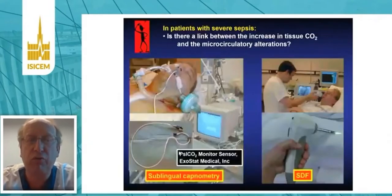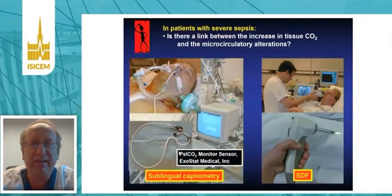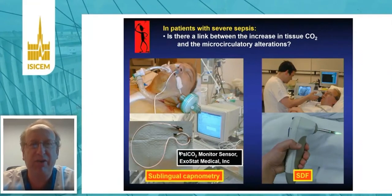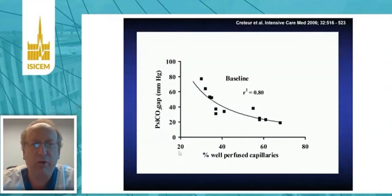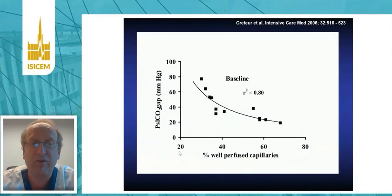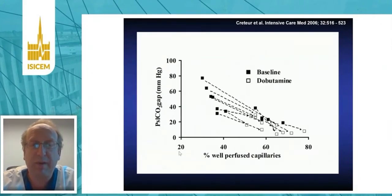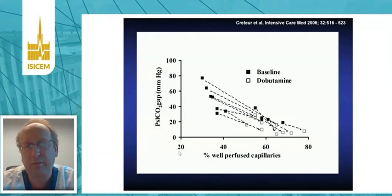Fifteen years ago, we were the first to study the link between increased tissue CO2 measured sublingually and microcirculatory alterations in septic patients, assessed using the SDF imaging device. We showed a nice correlation between the percentage of well-perfused capillaries and the CO2 gap. When tissue was well perfused, the CO2 gap was low; when tissue was poorly perfused, the CO2 gap increased. When we gave dobutamine, the resulting improvement in microperfusion was accompanied by a decrease in the CO2 gap.